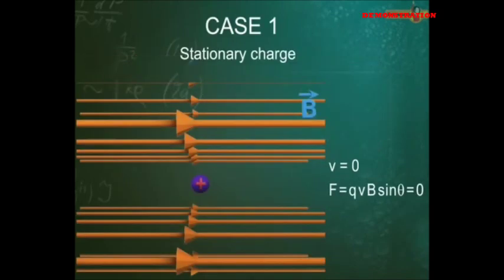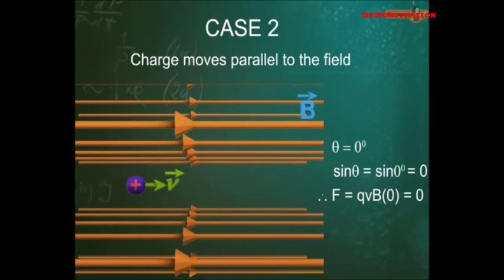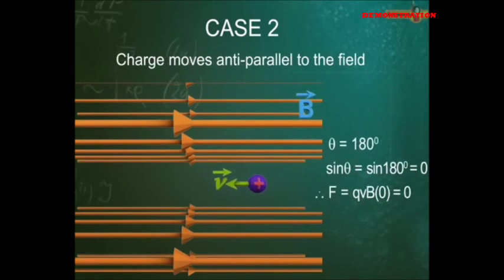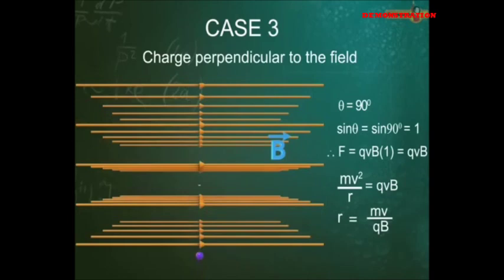Case 1: The positive charge Q is at rest in the magnetic field B. It remains at rest as the magnetic field does not exert any force on a stationary charged particle. Case 2: The positive charge moves parallel or antiparallel to the magnetic field. It continues to move along the same line with the same velocity in the same direction, since the force experienced is again zero.